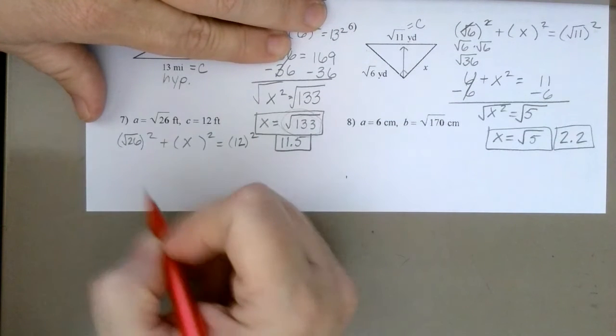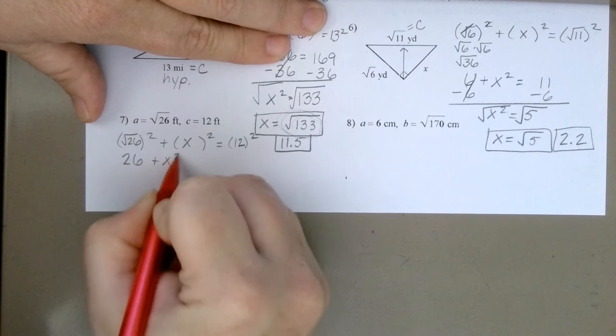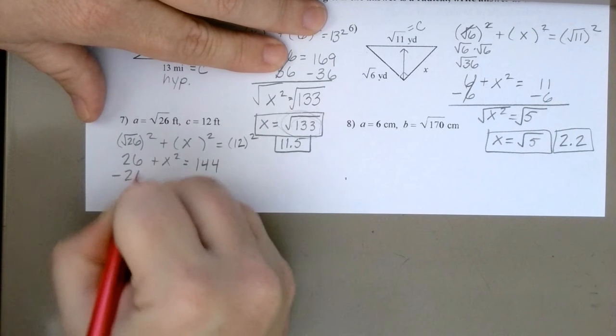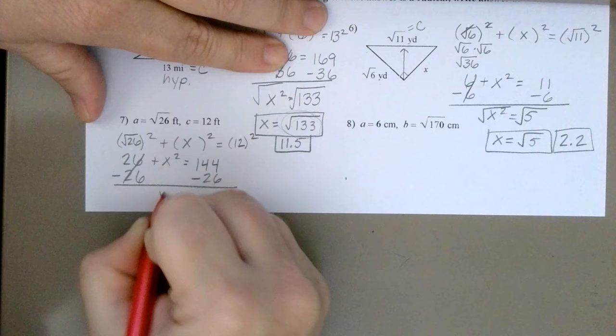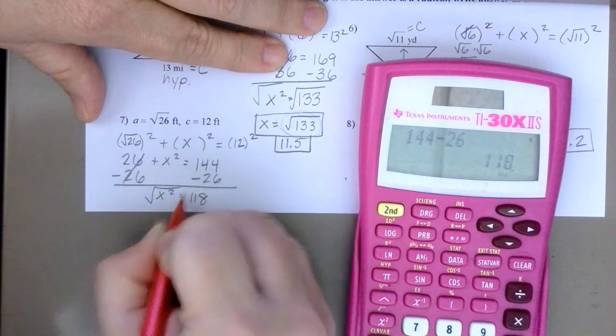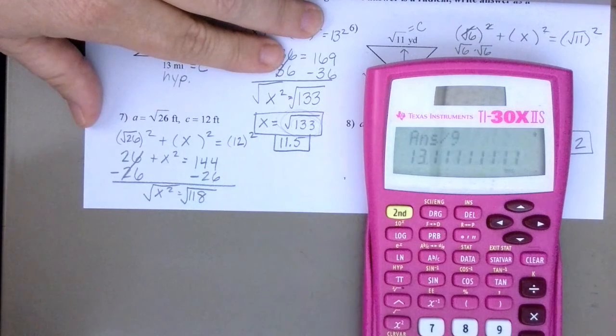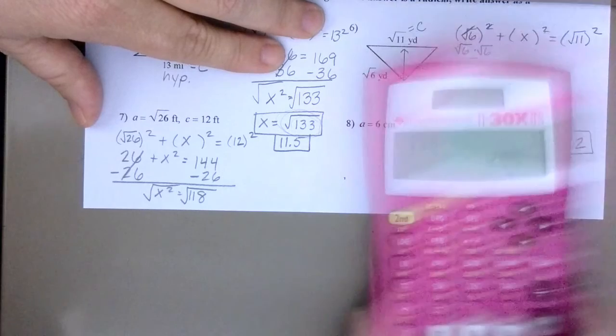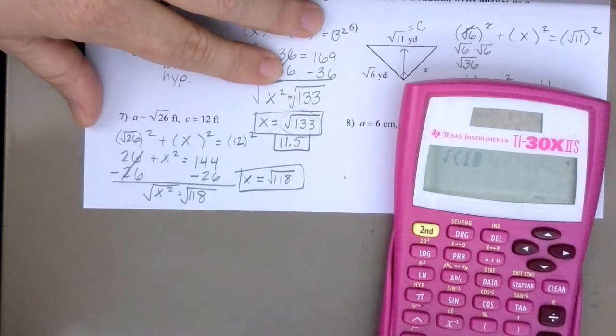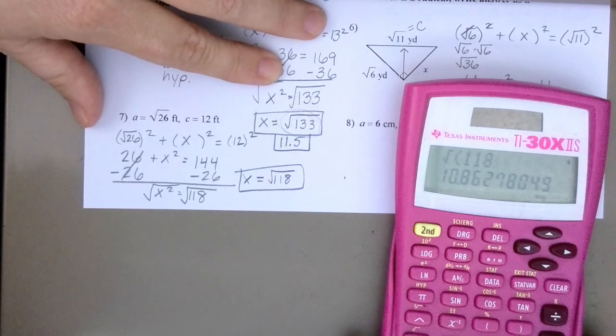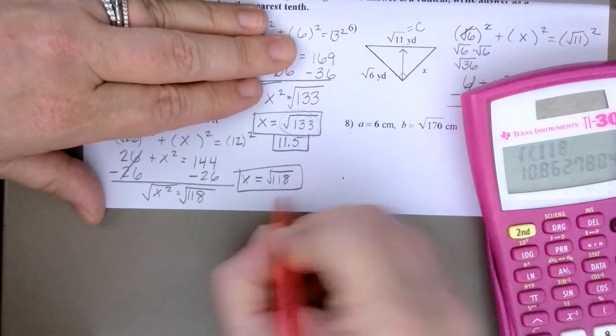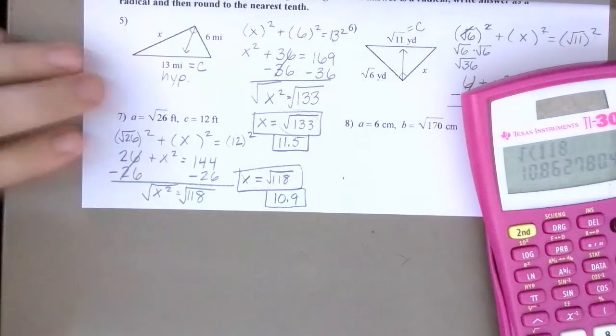So what's radical 26 squared going to be? 26 plus X squared equals what's 12 squared? 144. 144 minus 26? 118. Square root both sides. Can I divide 118 by 9? Nope. Can I divide it by 4? Nope. So it looks like X equals rad 118 is as far as I can go. I do, however, need to do that one. 10.86. What is that going to round off to? 10.9 because that 6 is going to bump that 8 up.